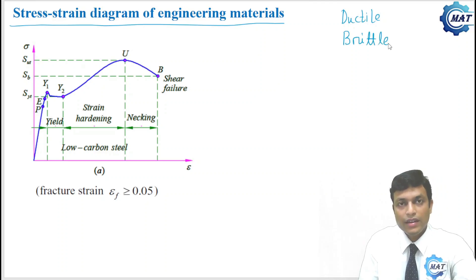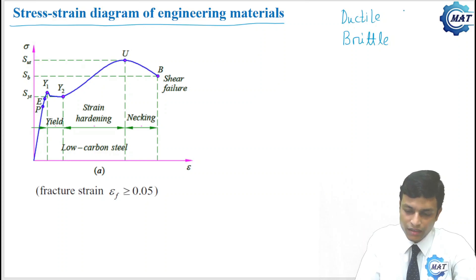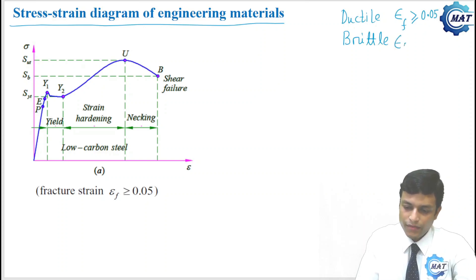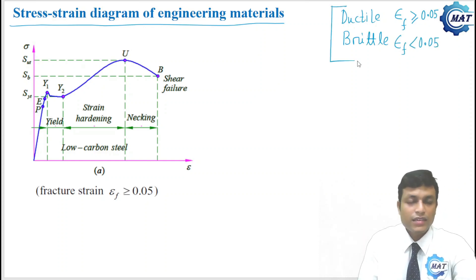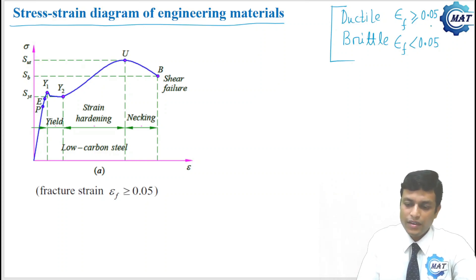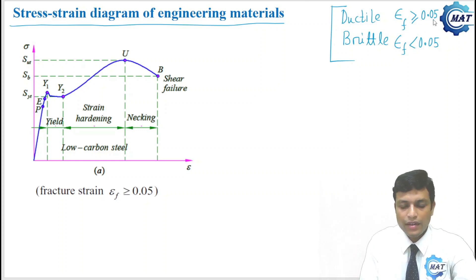When will we call a material ductile? When the fracture strain — that is, the strain at which the material fractures — is greater than or equal to 0.05, it is called a ductile material. If the fracture strain is less than 0.05, we call it a brittle material. Ductile materials elongate more before fracture, and brittle materials elongate less.